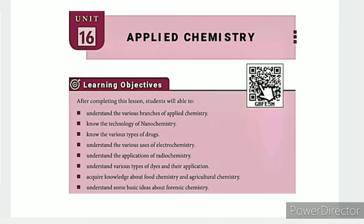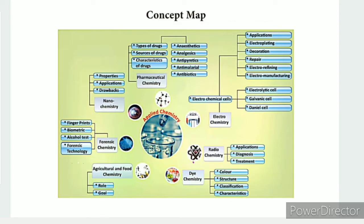The QR code link and ICT corner link are available in the description box. The unit guide is also in the description box. Now let's look at the concept map for applied chemistry.